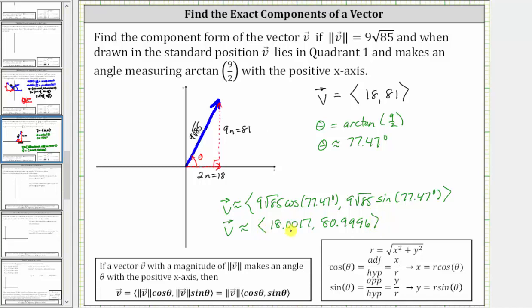So taking the first approach, notice how we get the exact components. Taking the second approach, we only get decimal approximations. I hope you found this helpful.